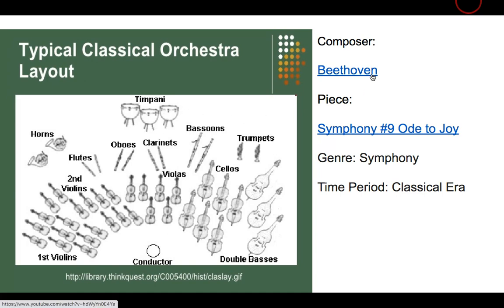We're going to listen to Beethoven's Symphony No. 9, which is known as the Ode to Joy Symphony. The genre is called symphony. What symphony actually means — it comes from the Italian genre sinfonia, which means without vocals. So it was a piece of music just dedicated to showcasing instruments, not vocals. This piece is written in the classical era.